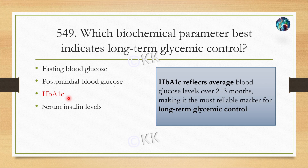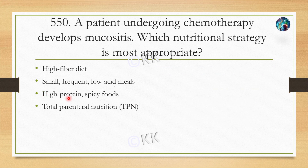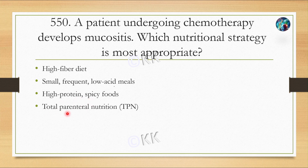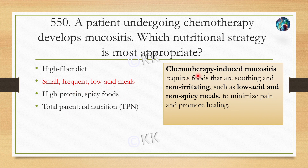Next question: a patient undergoing chemotherapy develops mucositis. Which nutritional strategy is most appropriate? Option A: high-fiber diet. Option B: small, frequent, low-acid meals. Option C: high-protein spicy foods. Option D: total parenteral nutrition. The correct answer is Option B — small, frequent, low-acid meals. Chemotherapy-induced mucositis requires foods that are soothing and non-irritating, such as low-acid and non-spicy meals, to minimize pain and promote healing.